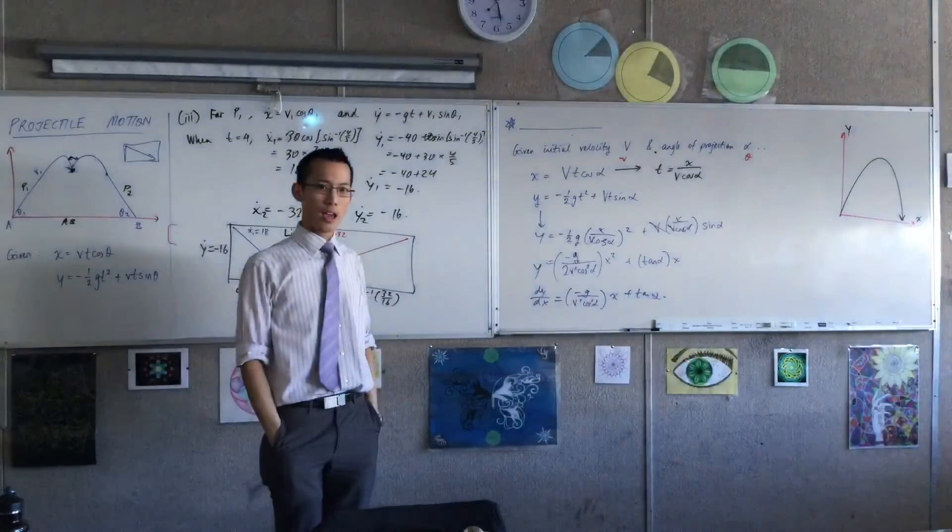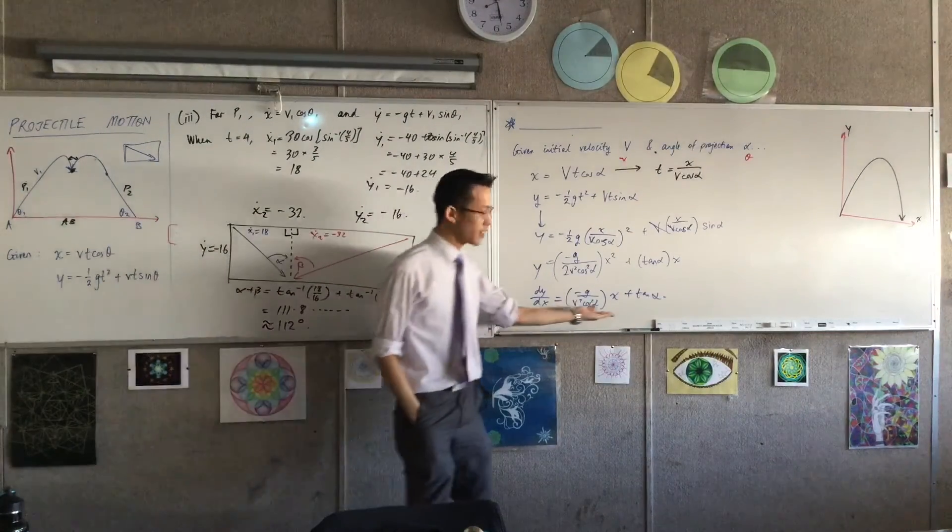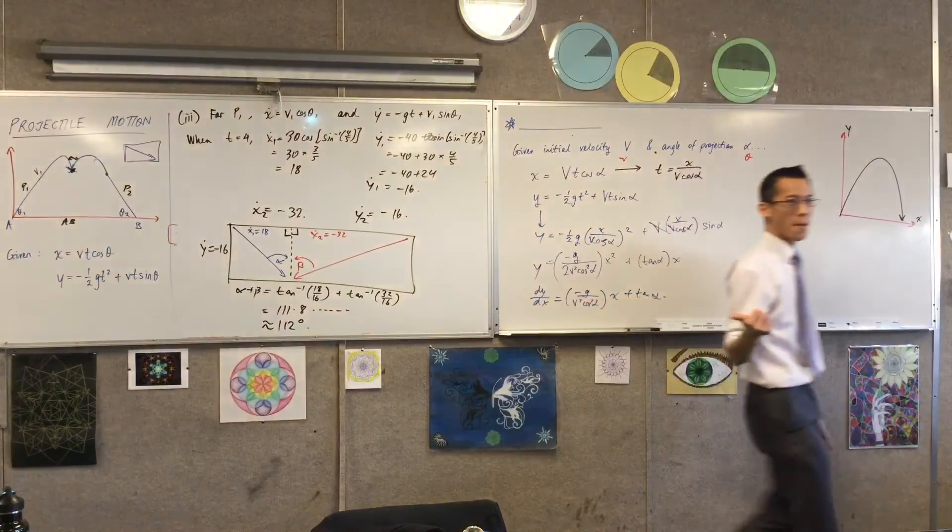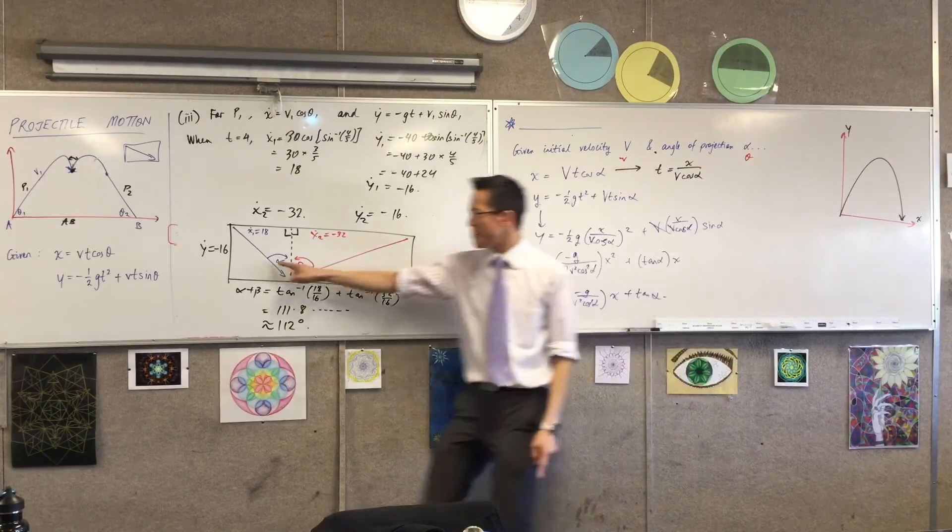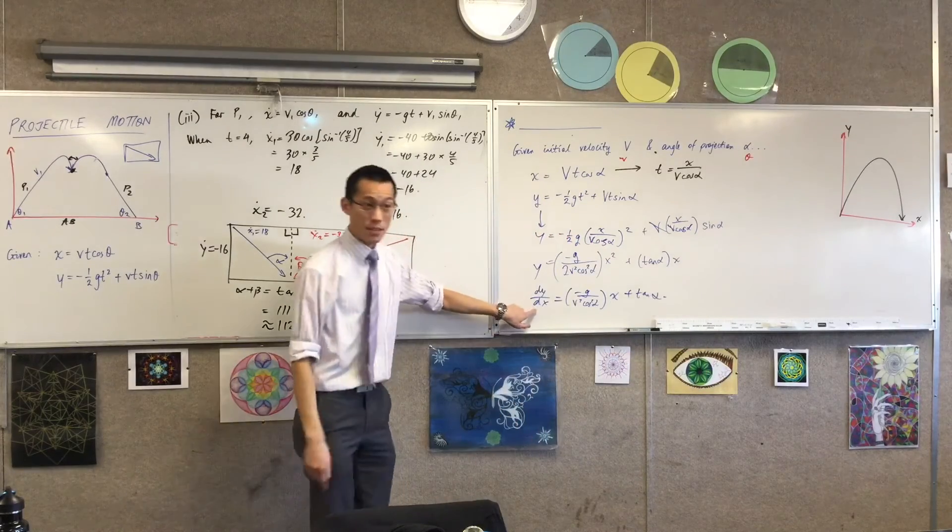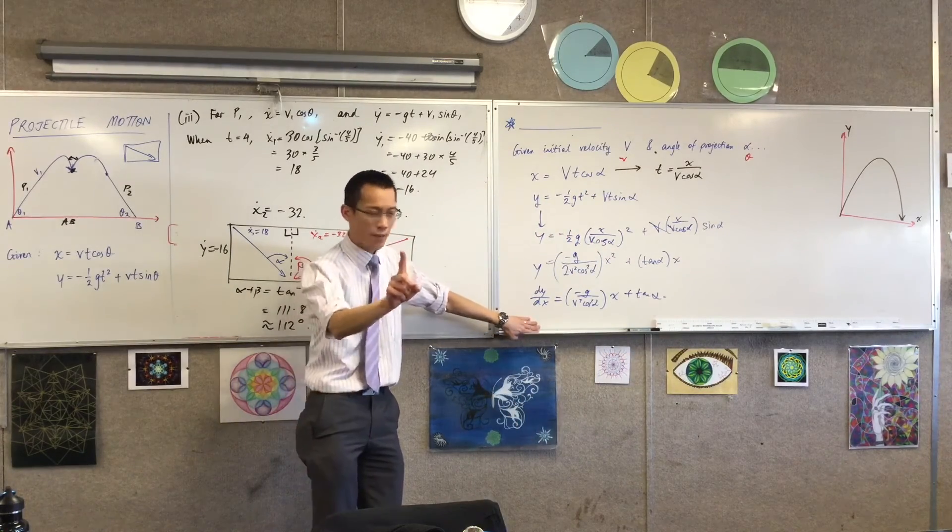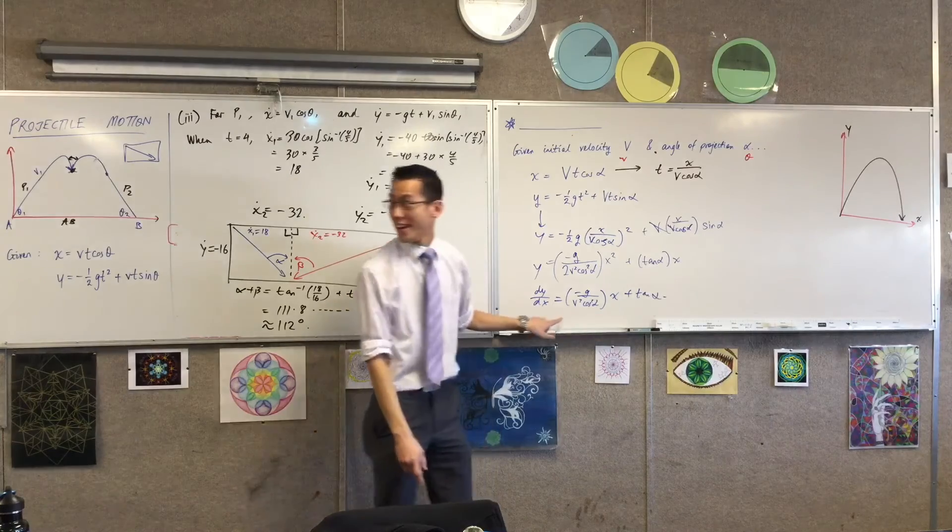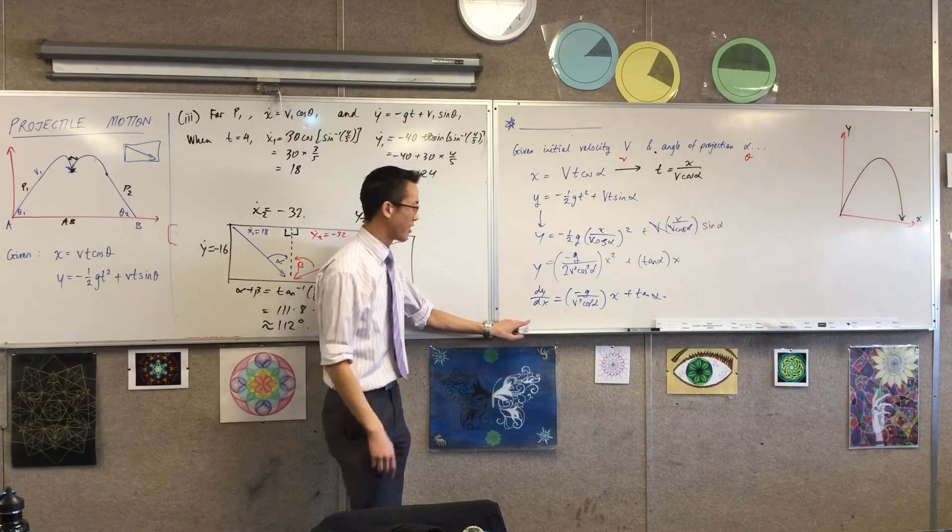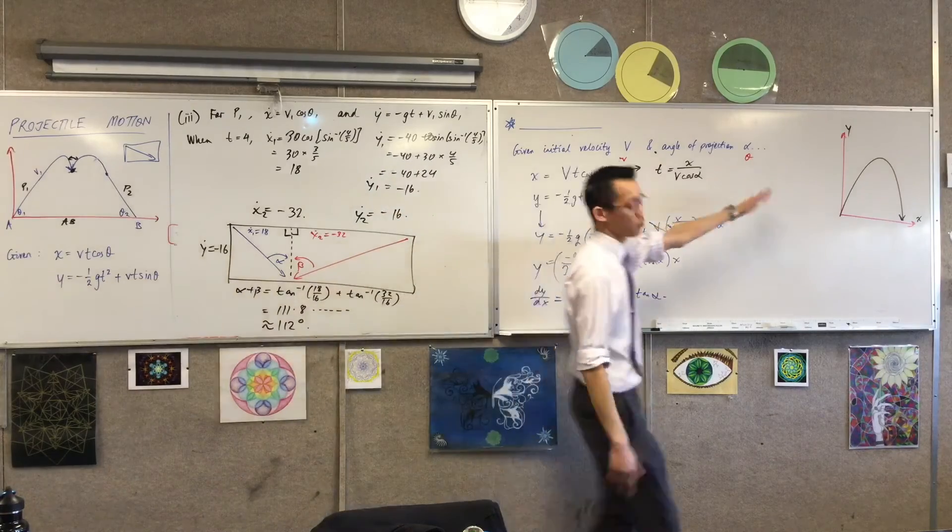This is the gradient given any particular value x. Now, why is gradient useful to us in projectile motion land? It's because it gives us any angle you want. Any angle you want. This m, this gradient, is tan theta, not tan alpha. Alpha is an initial condition.